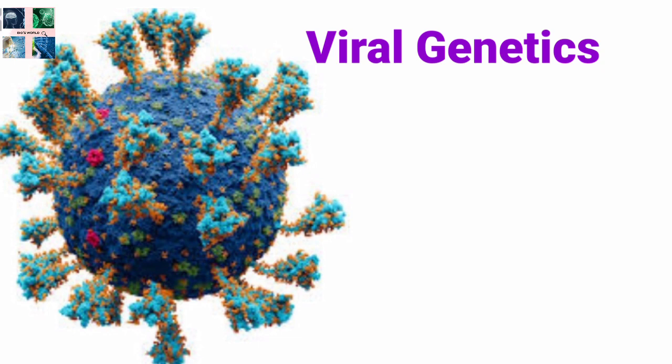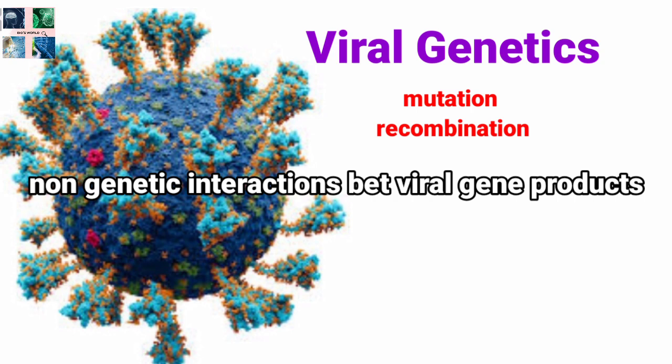Next is about viral genetics. Viruses are obligate intracellular pathogens that replicate only in living host cells. Like other living beings, viruses obey the laws of genetics. Viruses show variation in their genomic characteristics through two principal methods: mutation and recombination. Additionally, non-genetic interactions between viral gene products take place in four ways: complementation, phenotypic mixing, genotypic mixing, and interference.